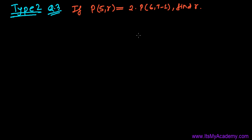Here is the third question based on type 2, where we have to find out the value of R. The question is: P(5, R) — permutation of 5 objects taken R at a time — equals 2 times P(6, R-1) — permutation of 6 objects taken R minus 1 at a time. Find R.